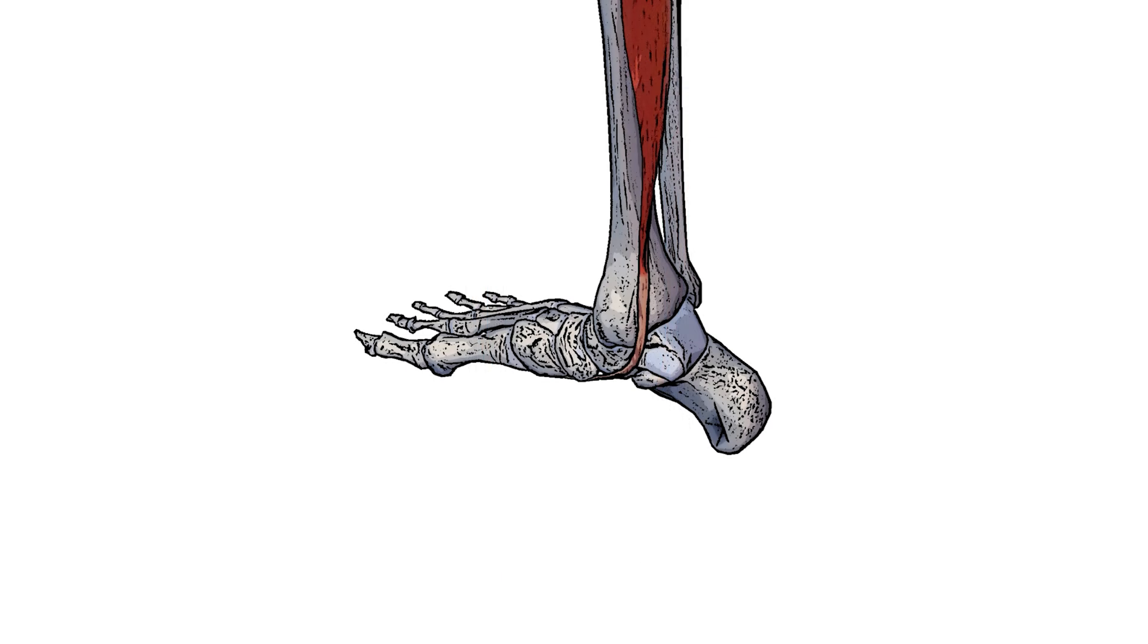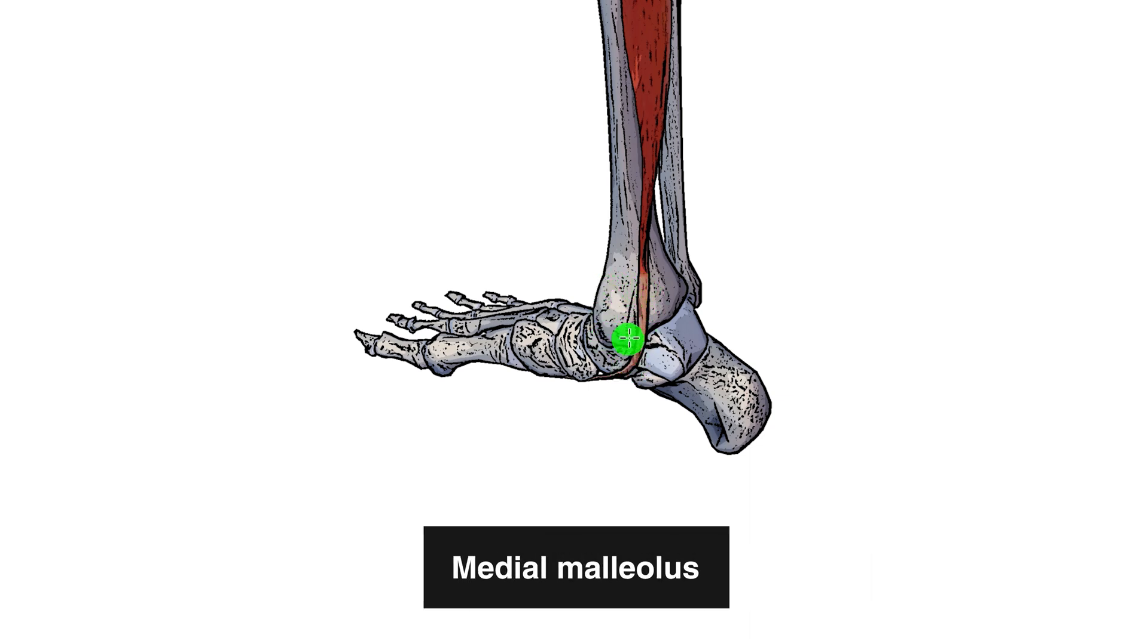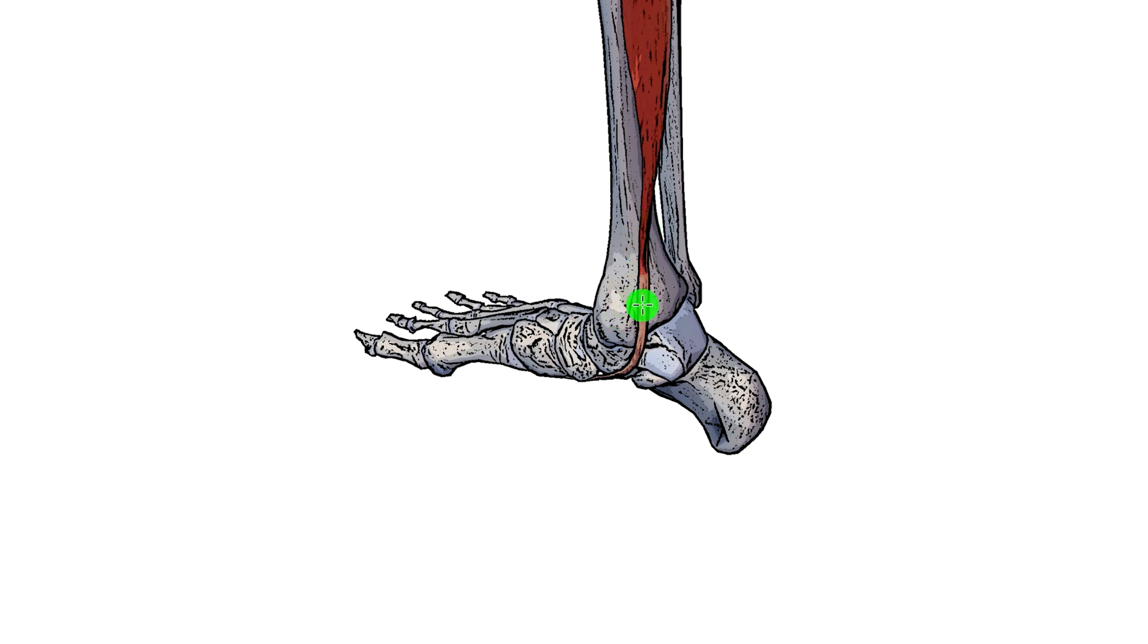So I've swapped to a different view here as I want to show you the relation of the tendon of the tibialis posterior to the medial malleolus. So the medial malleolus is this section of the tibia here. It's that big bump which you have on the inside of your ankle, and the tendon of the tibialis posterior muscle is just passing behind that medial malleolus.